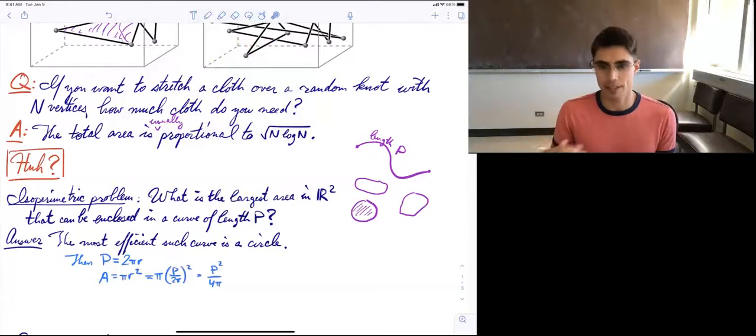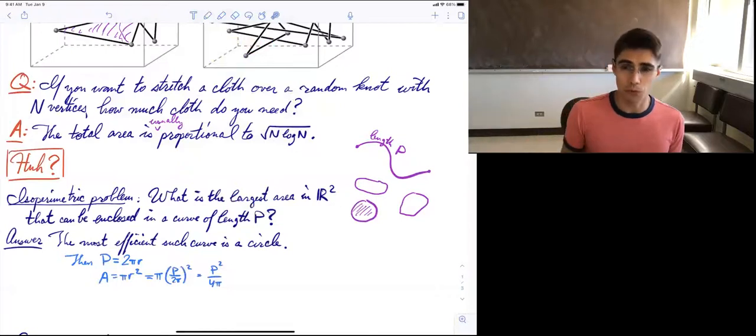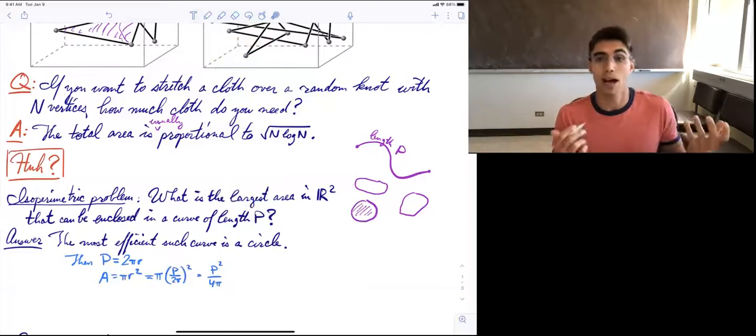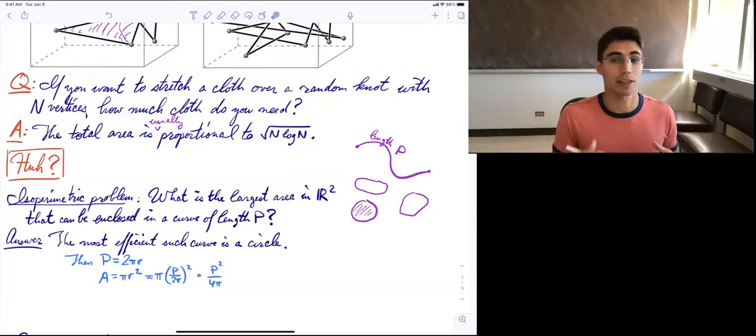This is something that's very easy to guess. The Greeks already guessed it. And they sort of proved it, but they just proved that the sphere was better than any polygon. So what if you have a different smooth, sorry, the circle is better than any polygon.